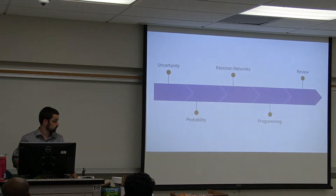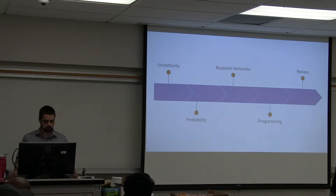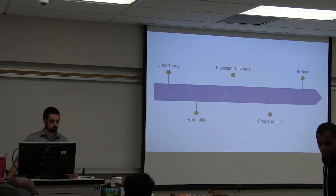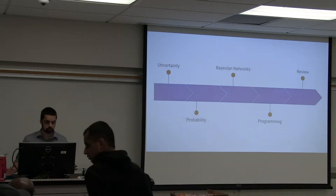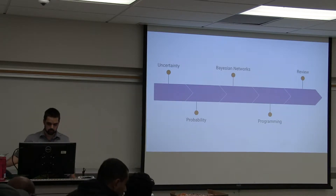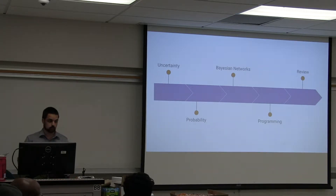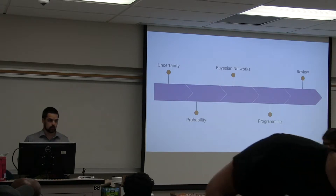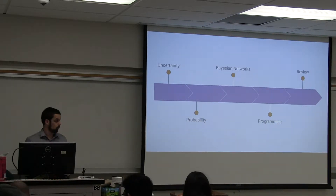Specifically, what we'll be talking about today: we'll start with discussing uncertainty under the scope of AI, then give a brief review of some probability that would be important to know for the programming part of this, which will also provide an introduction for Bayesian networks. After we discuss that, we will go right into the programming, and then we'll do a little review and talk about how we can actually improve upon what we coded today.